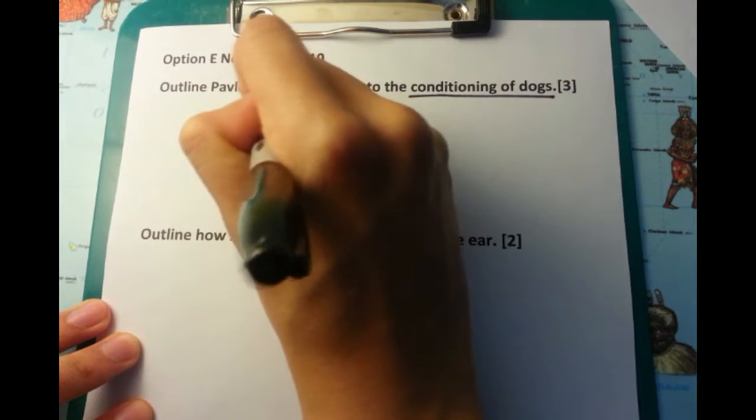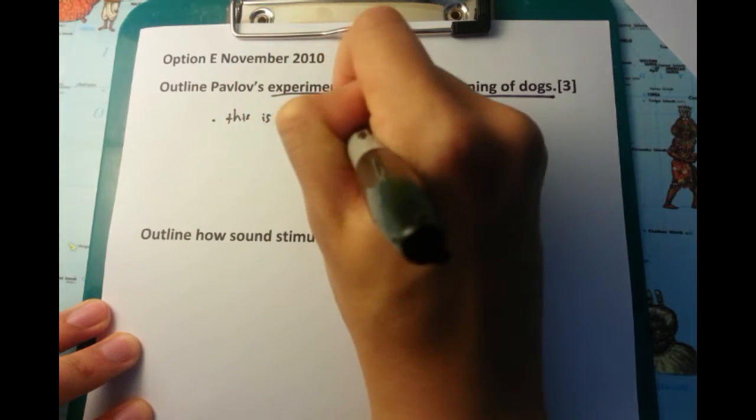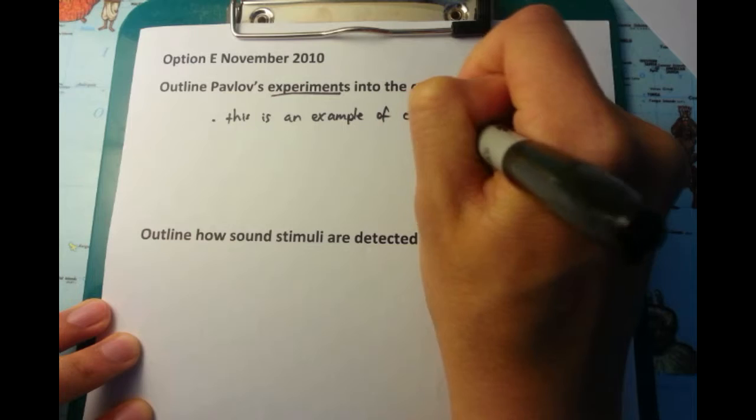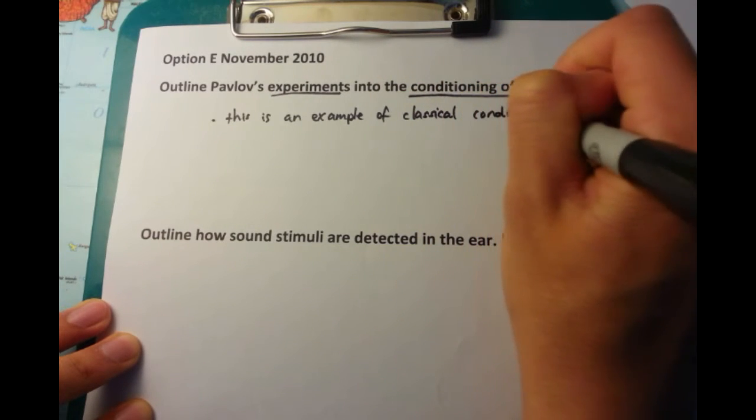The first thing I'm going to say is that this is an example of classical conditioning, because there's a few different types of conditioning available, but this one is a classic or classical type that there is.